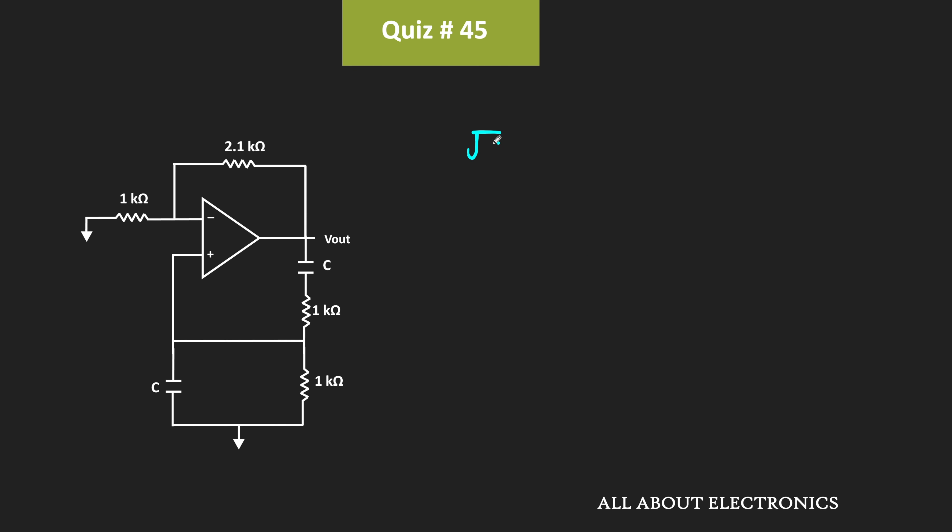Now root 6 is approximately equal to 2.45. So we can say that the value of C is equal to 1 divided by 2π times root 6 μF.